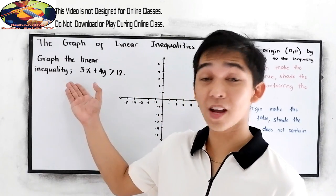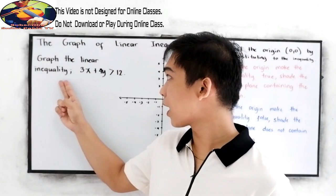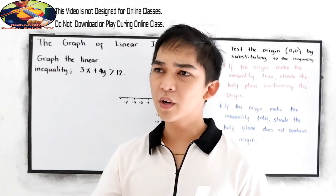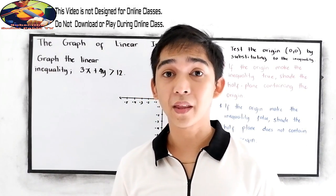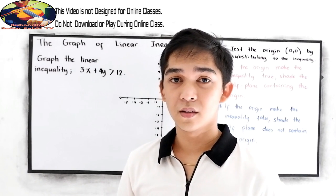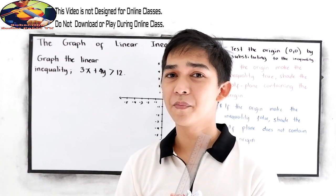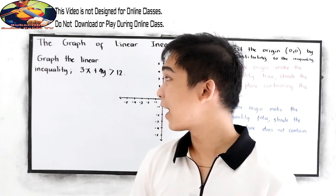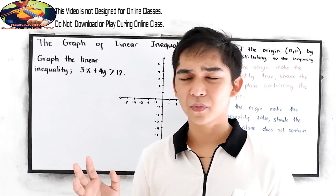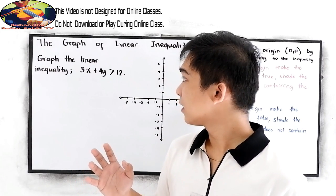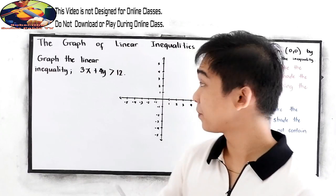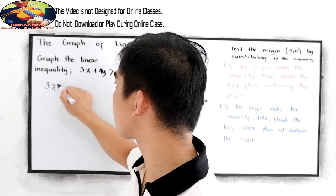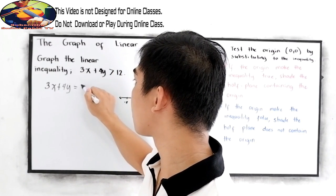So let's have this example. Graph the linear inequality 2x plus 4y is greater than 12. In our linear equation, we have different ways or methods to graph the equation. We have the x and y intercept, the slope, rise over run. In this case, let us first write it into an equation. So that is into equation — linear equation: 3x plus 4y is equal to 12.